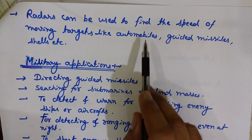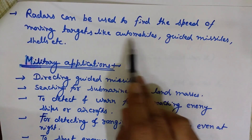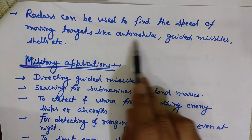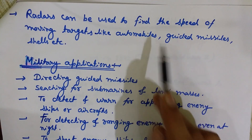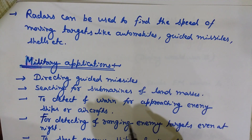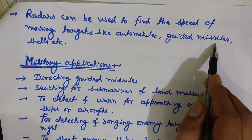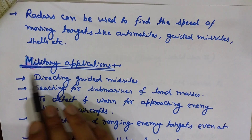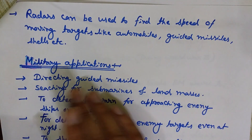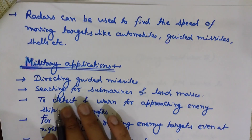Radars can also be used to find the speed of moving targets like automobiles, guided missiles, shells, and other objects, as they can easily detect the velocity of moving targets.